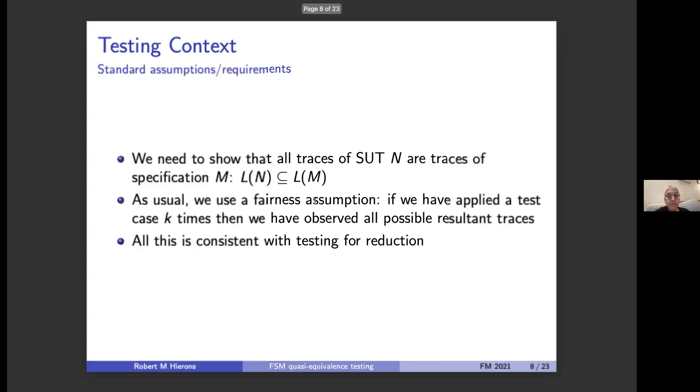There's a small number of papers. If we look at reduction, the standard thing to do is, well, we're testing for trace inclusion, and if we have non-determinism, we have to be able to observe all the behaviors of the system in response to an input sequence. So we make a fairness assumption, and so this is the classic context for reduction. If we're testing for equivalence, we still need to do this. We still need to check that all behaviors of the system under test are also behaviors of the specification, and again we're going to need a fairness assumption.